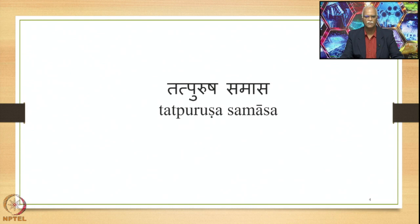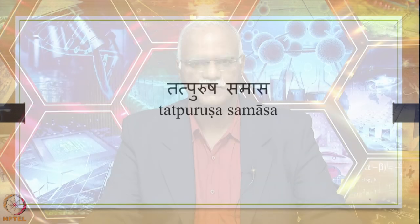We have been studying Tatpurusha Samasa in this particular course. Tatpurusha Samasa is one of the four types of Samasas in Sanskrit. The other Samasas are Avyaibhava, Bahuvrihi, and Dvandva. Panini has stated them in the order: Avyaibhava, Tatpurusha, Bahuvrihi, and Dvandva. We said that Tatpurusha Samasa is one of the biggest and most productive compounds available in Sanskrit.